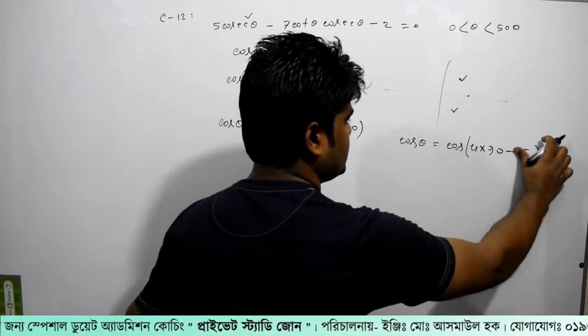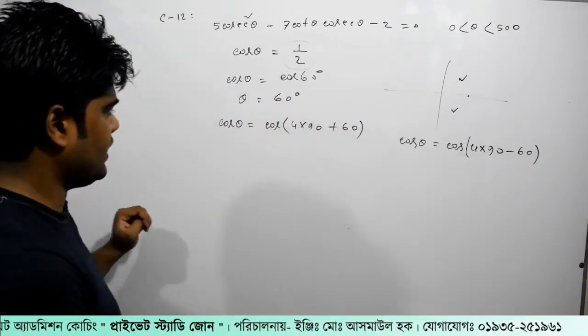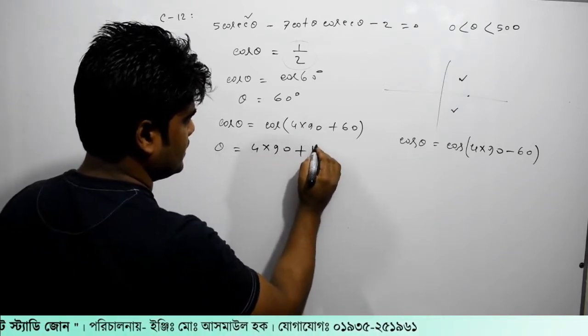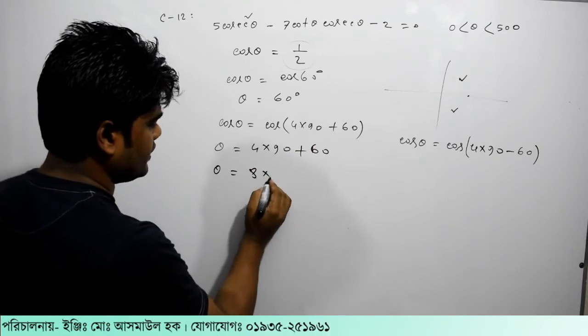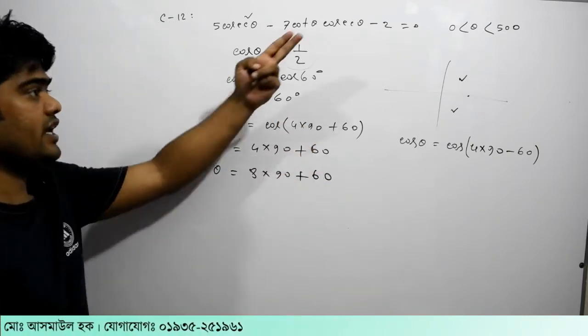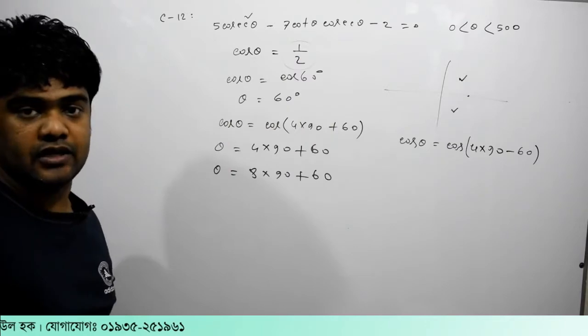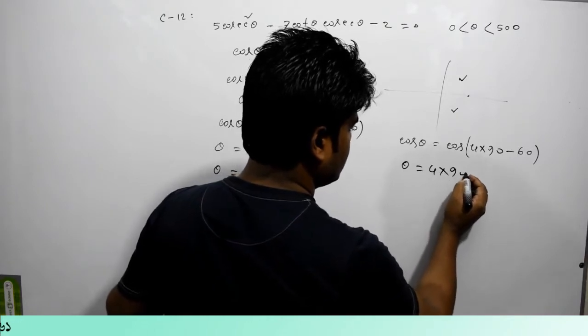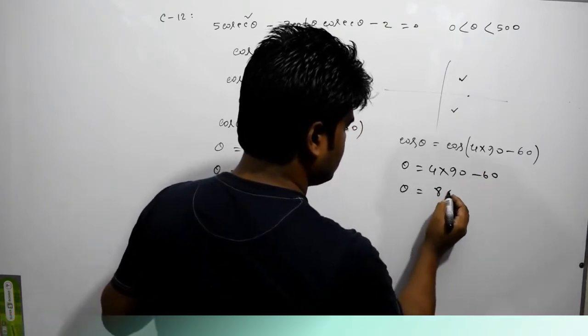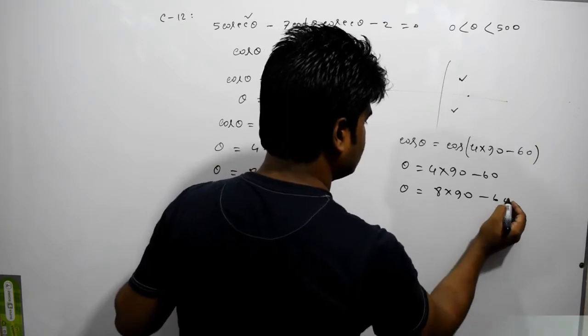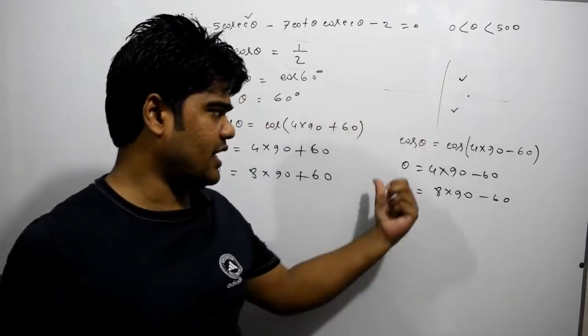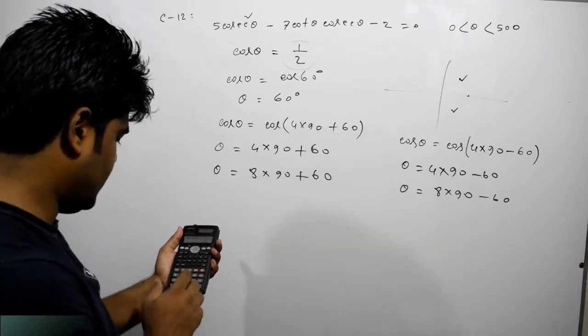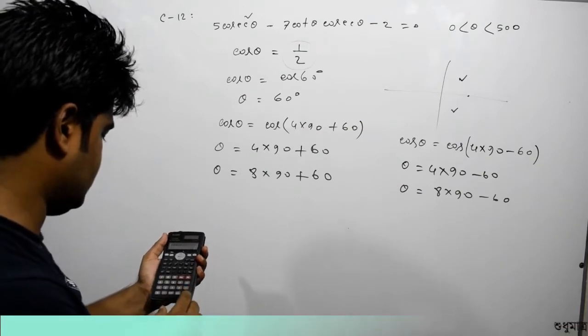So this is cos theta is equal to 490. This is cos theta is equal to 490 plus 60. So here I will say once, it is cos theta is equal to 1. So this is cos theta equals cos theta. This is cos theta is equal to cos theta.